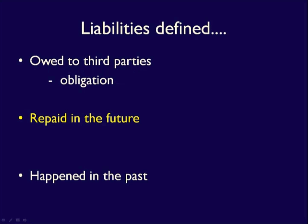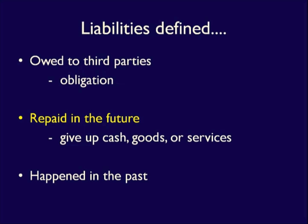Liabilities will be settled in the future through the giving up of either cash, goods, or services. For instance, a student loan will be settled through the payment of cash in the future, but other obligations may be settled by providing a service or delivering a good. Third, liabilities are due to past events. To summarize, everything that a company owes to a third party is considered a liability — an obligation due to a past event that the business will settle in the future.